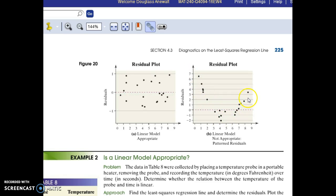If something like that shows up in your residual, then a linear model would not be appropriate. If there is no discernible pattern like this example here, then a linear model would probably be appropriate.